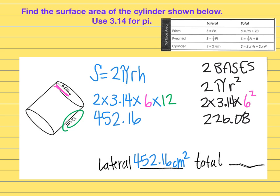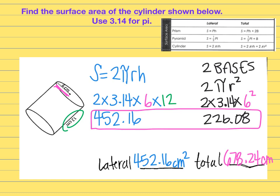That's only the value of the two bases. So my last step is to take both values, combine them together to get my total, which would be 678.24. And again, make sure you have square centimeters for your final answer.